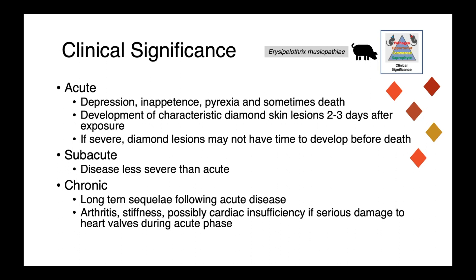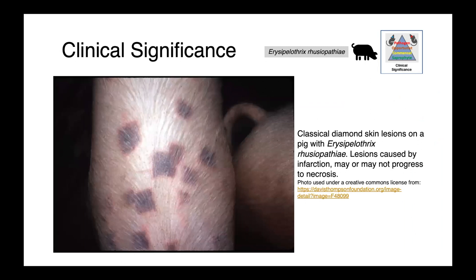We know that Erysipelothrix has a predilection for causing mitral valve endocarditis in the acute phase of disease. In this image, you can see very classical diamond skin lesions in an affected pig. These lesions are caused by infarction of the vasculature — we have the presence of thrombi or clots which occlude those terminal capillary beds. In pigs, capillary beds within this diamond-shape distribution are vascularized by a single terminal arteriole, so the vascular anatomy can be directly related to what you see clinically.